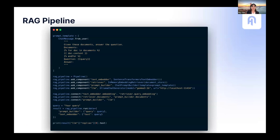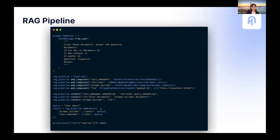This is the code of the exact same RAG pipeline. All you need to do is define your prompt using Jinja2 syntax, add your components one by one to your pipeline, connect them in the way you want, and run the pipeline with the query. But RAG is not the only use case — you can do web RAG, retrieving from the web instead of a database. You can use Haystack to convert, preprocess, embed, and index your files, do advanced retrievals like hybrid or HyDE, or create a tool-calling agent or self-reflecting agent.